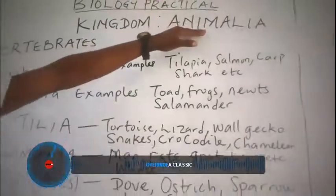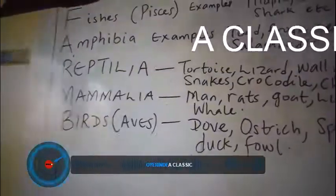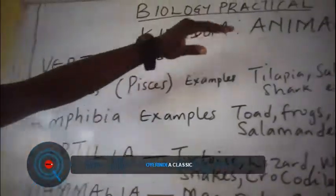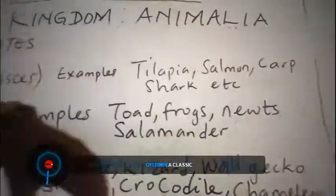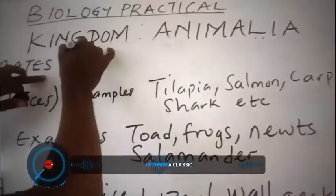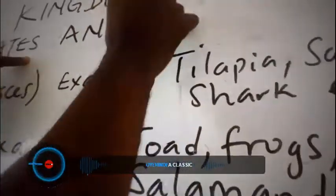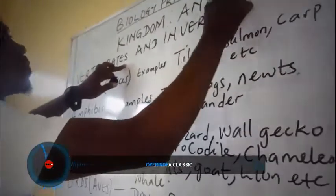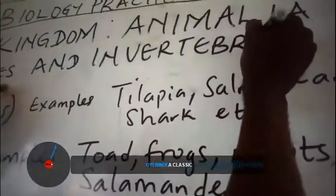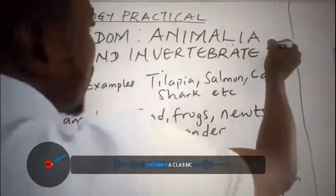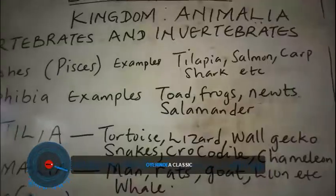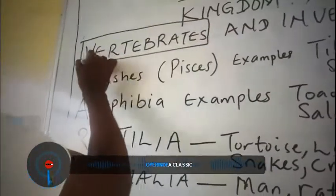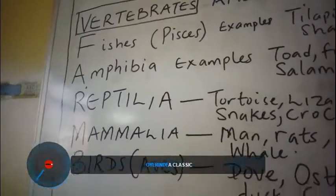Kingdom Animalia. Under this kingdom, we have to divide them into vertebrates and invertebrates. But we shall be looking at the vertebrates now.